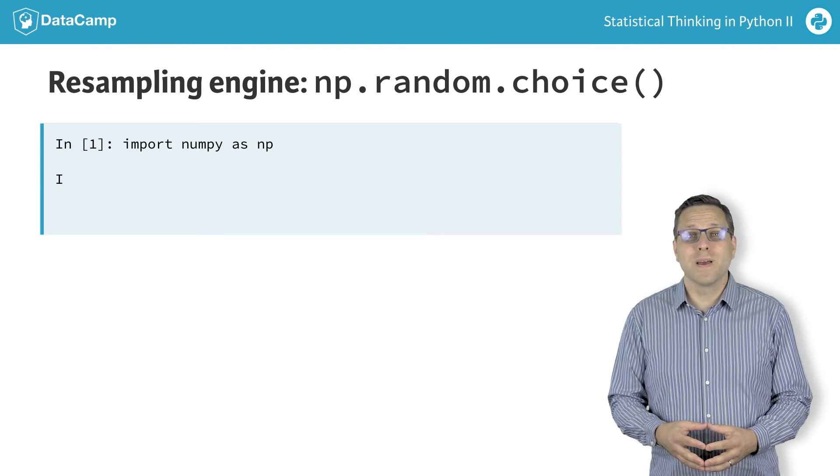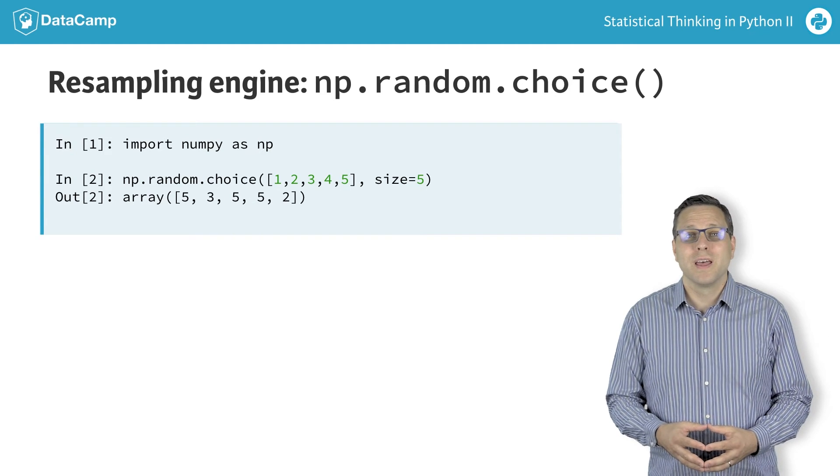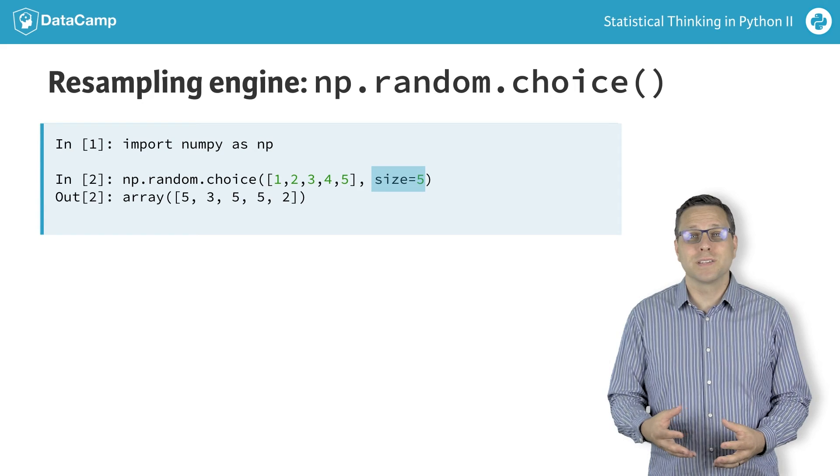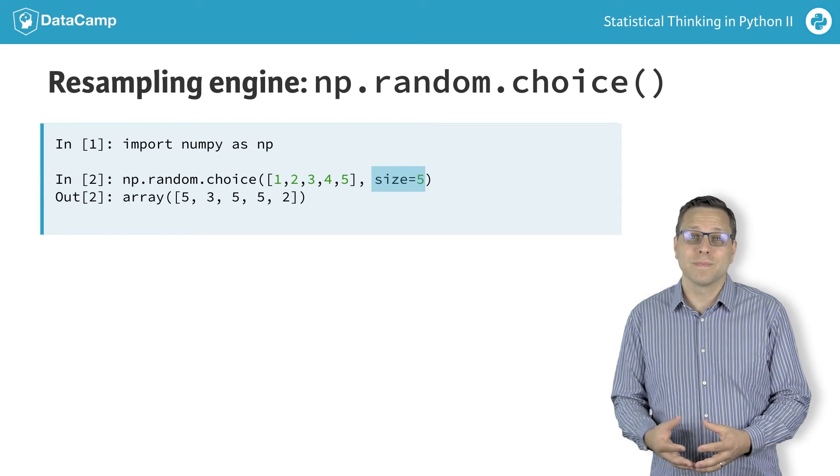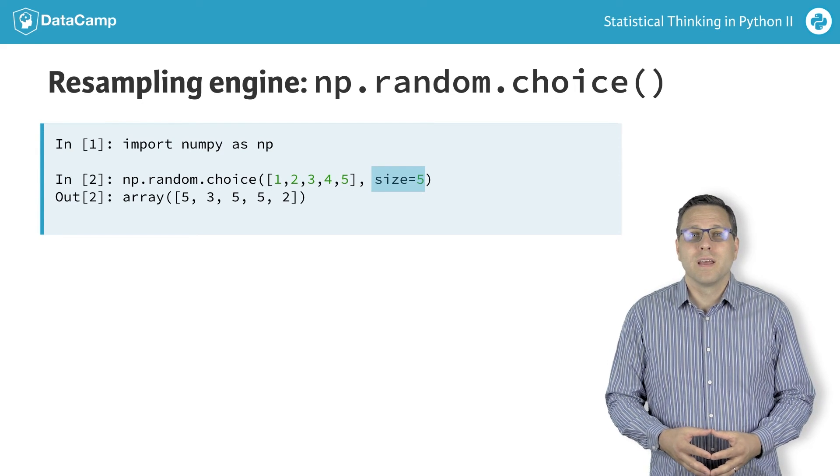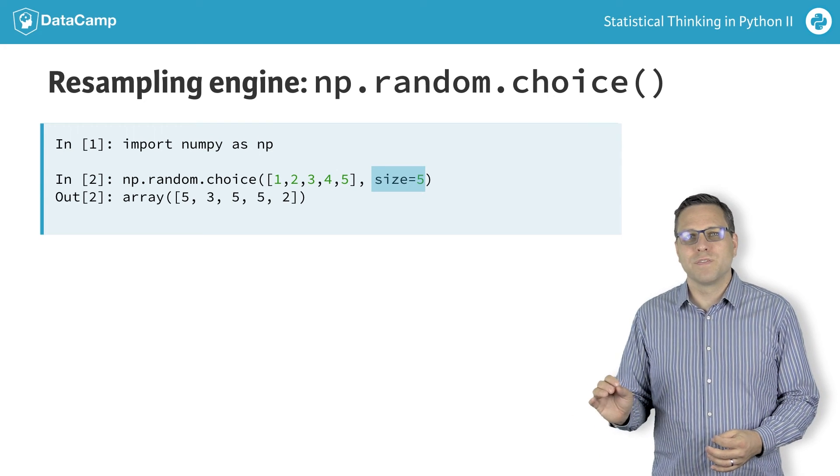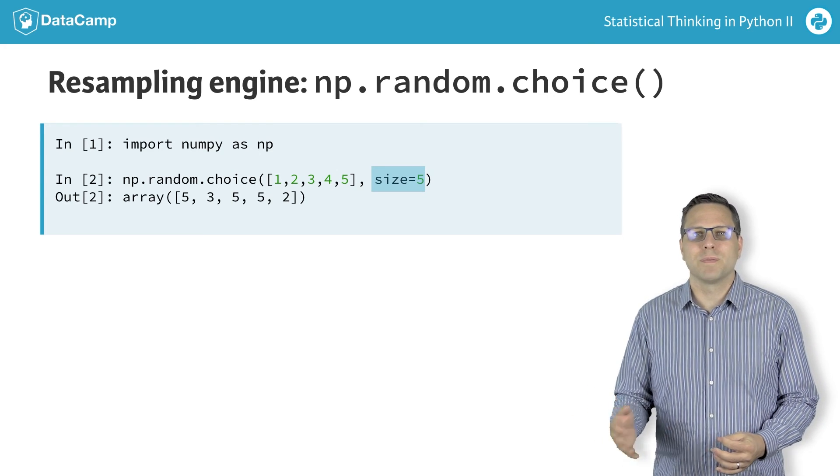Conveniently, like many of the other functions in the numpy random module, it has a size keyword argument which allows us to specify how many samples we want to take out of the array. Notice that it chose five three times. The function does not delete an entry when it samples it out of the array.